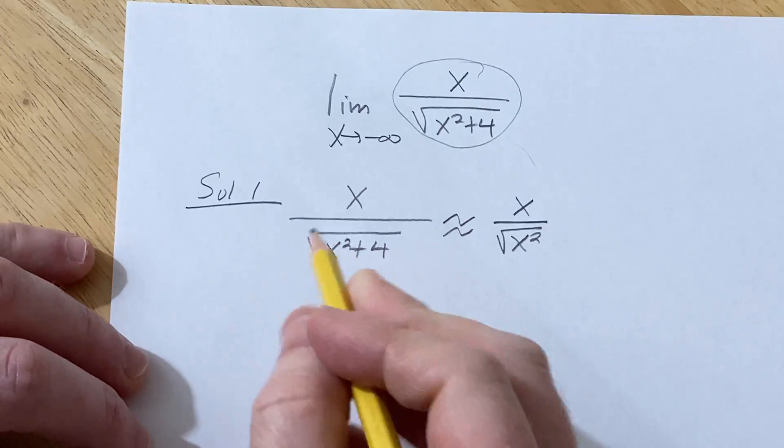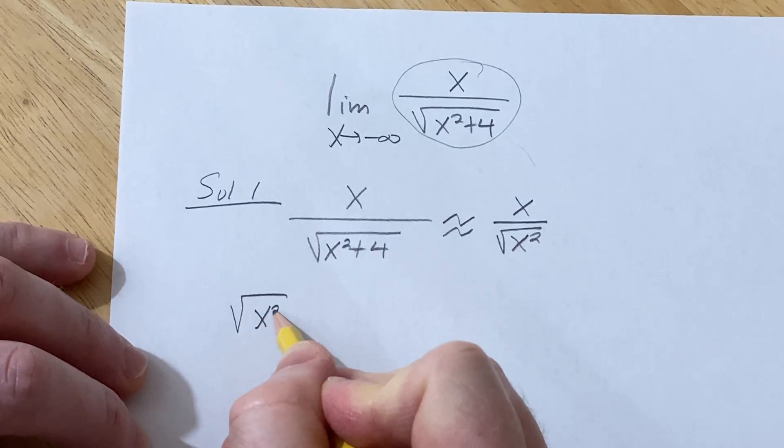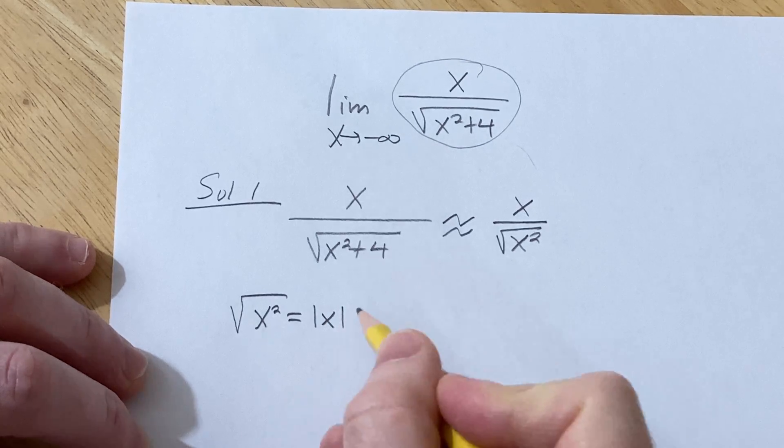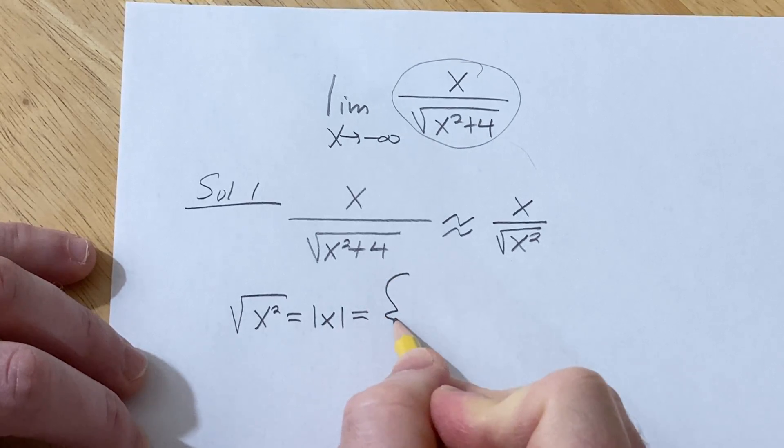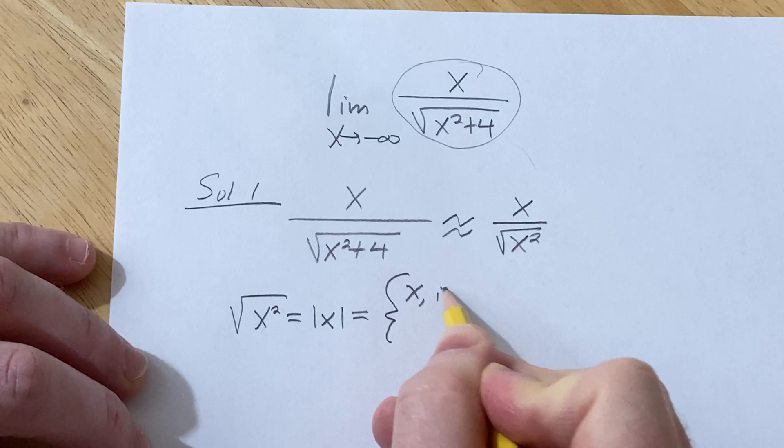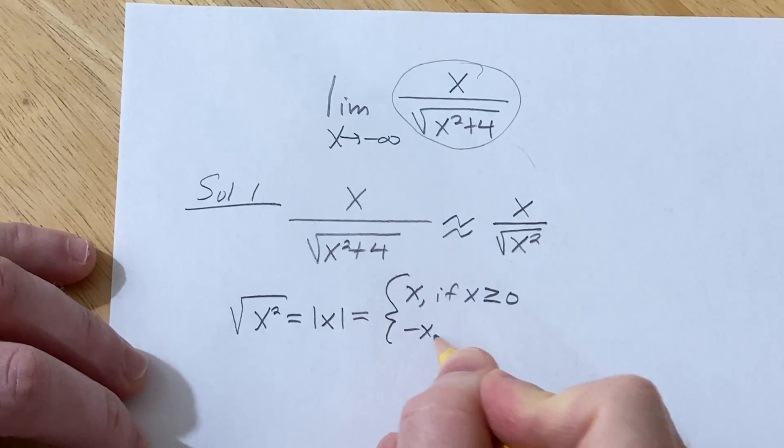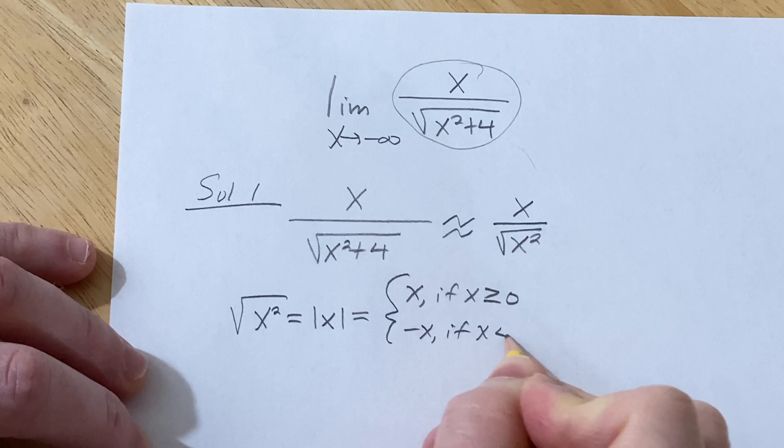Now the square root of x squared is actually something that we need to know. It's the absolute value of x and that's a piecewise function. So that's x if x is greater than or equal to 0 and it's minus x if x is less than 0.